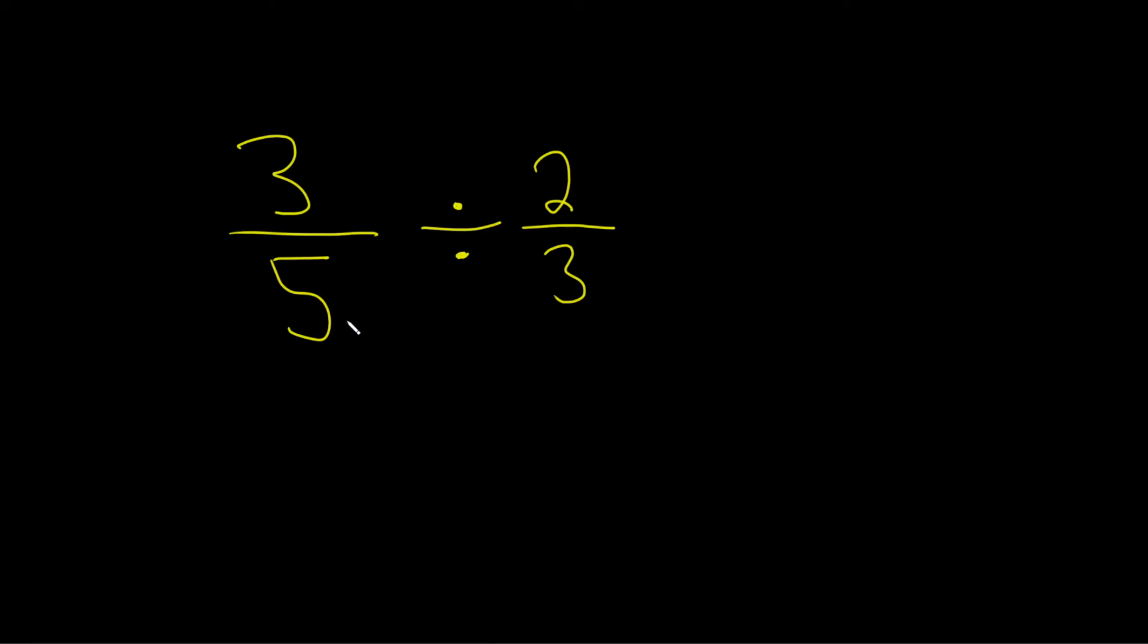Divide the fractions, 3 over 5 divided by 2 over 3. It's really tempting to accidentally cancel the 3's here, but you shouldn't do that.